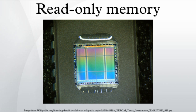Modern NAND flash makes efficient use of silicon chip area, resulting in individual ICs with a capacity as high as 32 GB as of 2007. This feature, along with its endurance and physical durability, has allowed NAND flash to replace magnetic storage in some applications. Flash memory is sometimes called flash ROM or flash EPROM when used as a replacement for older ROM types, but not in applications that take advantage of its ability to be modified quickly and frequently. By applying write protection, some types of reprogrammable ROMs may temporarily become read-only memory.